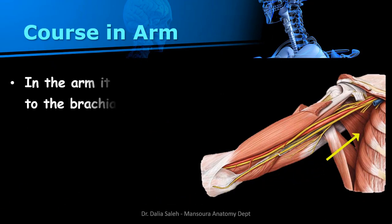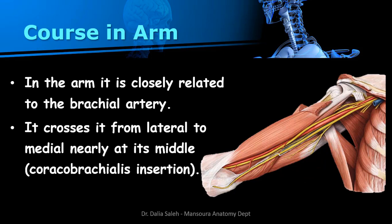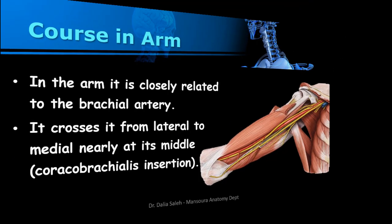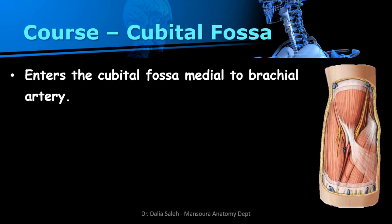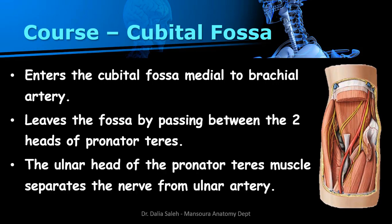Its course inside the arm, which starts at the lower border of the teres major muscle, is related closely to the brachial artery. It crosses the artery from lateral to medial nearly at the point of insertion of the coracobrachialis muscle, then enters the cubital fossa medial to the brachial artery.